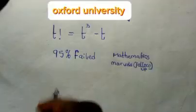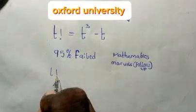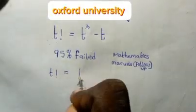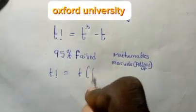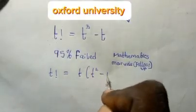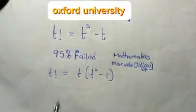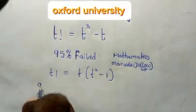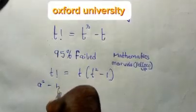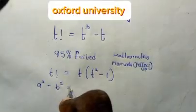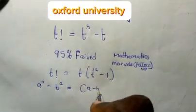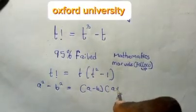Here now t is common. So we have t factorial is equal to t into bracket t squared minus 1. Now recalling the factorization of difference of two squares, when you have a raised to the power of 2 minus b raised to the power of 2, this is equal to a minus b multiplied by a plus b.